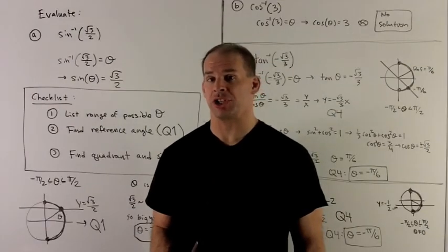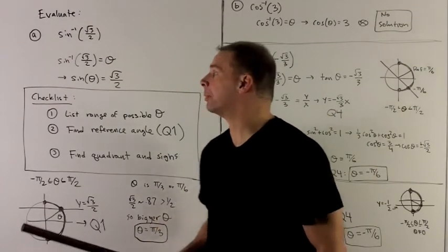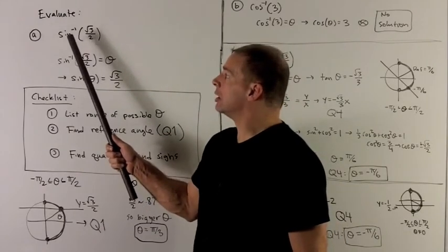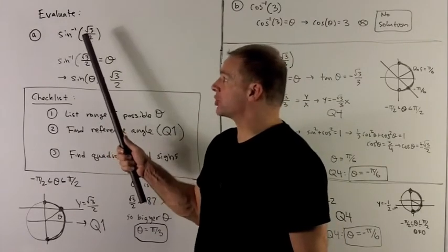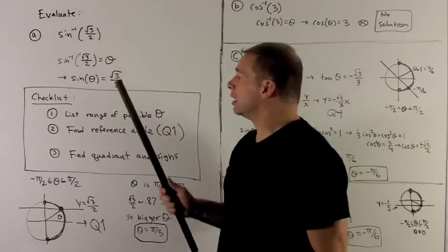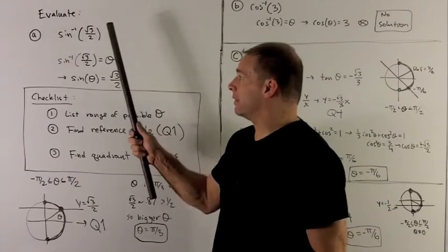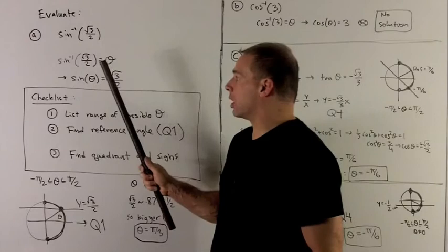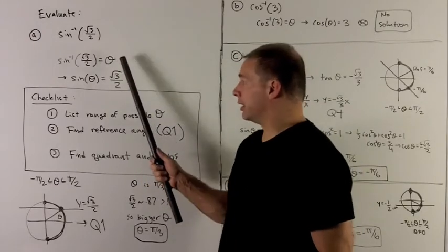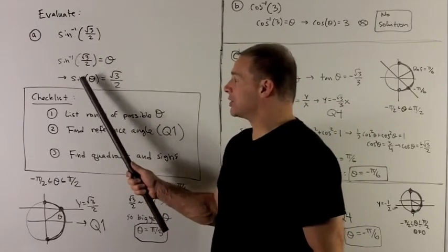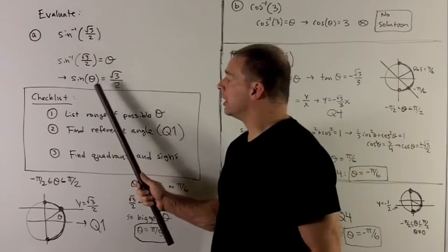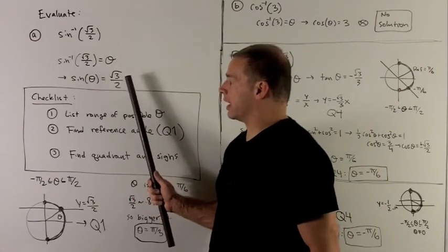Evaluate the following trig expressions. For the first one, I want to know what is the angle sine inverse of radical 3 over 2. To start, I'm just going to give this expression a name — I'll call it theta since it'll be an angle — and I can rewrite it as sine theta equals radical 3 over 2, and now I can work on this.